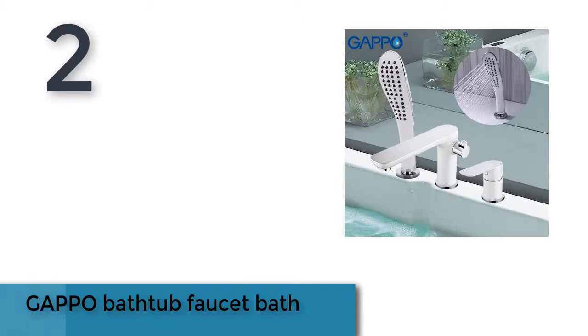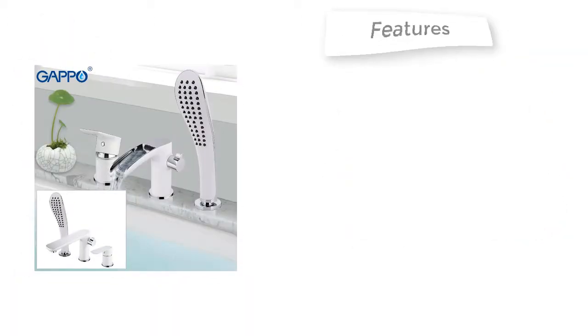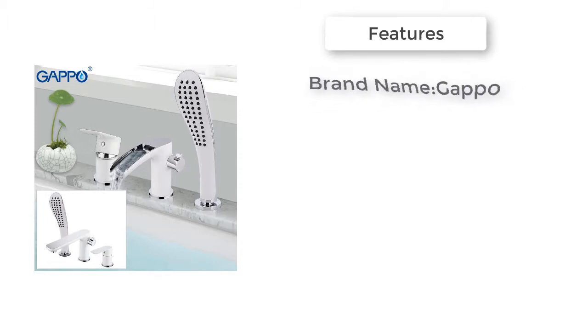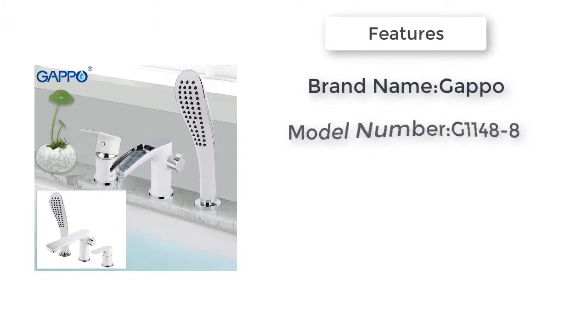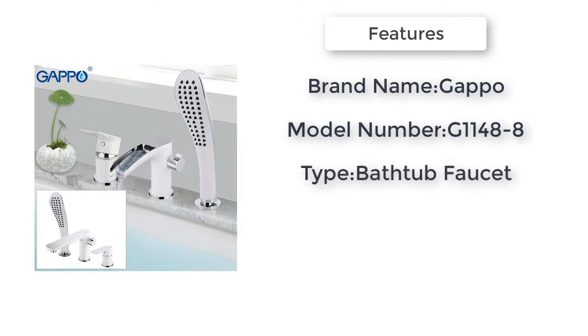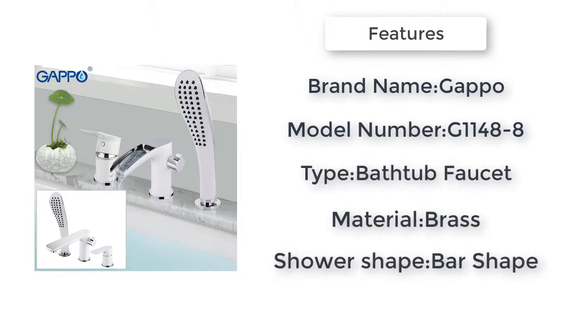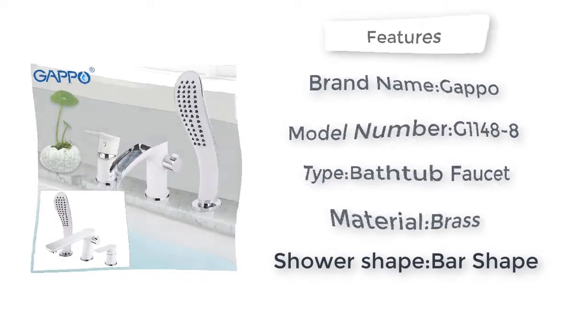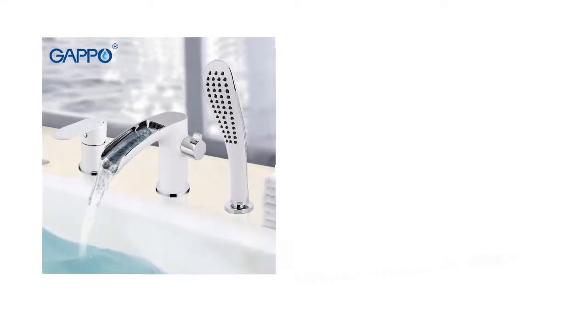Item number two is Gappo bathtub faucet bath. Brand name Gappo, model number G1148A, material brass, surface finishing lacquered. Gappo bathtub faucet bath shower, bathroom shower faucet tap, waterfall bath faucet shower system, faucet GA1148A.